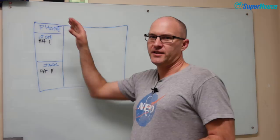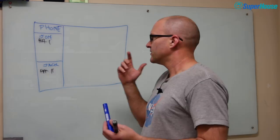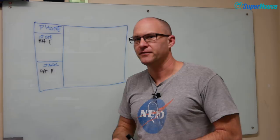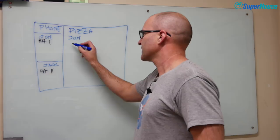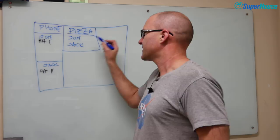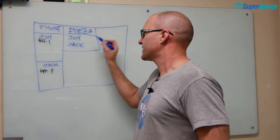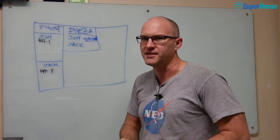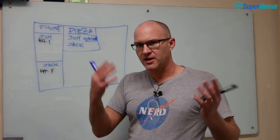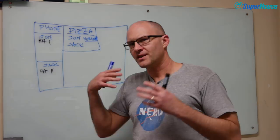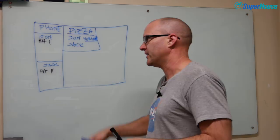Think of MQTT this way - imagine you've got a whiteboard. We had a section for phone, with subsections for John and Jack, and each person would make a mark every time they called. You might also have another section for pizza, with subsections for each person's preference and whether they'll be home that Friday. The whiteboard becomes a central place to share messages in a fairly structured way, with defined places to put different bits of information. MQTT is essentially that for software.